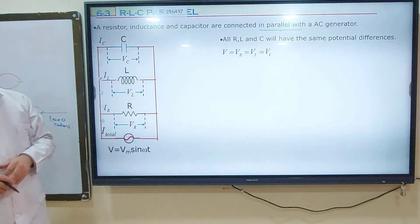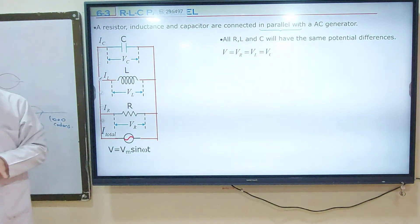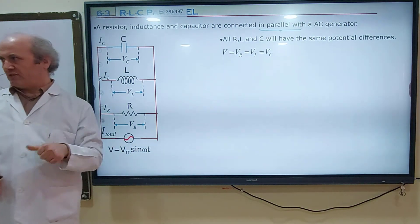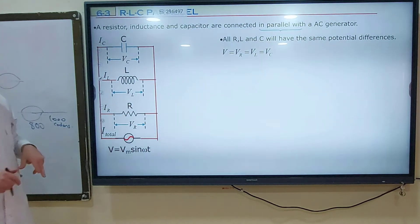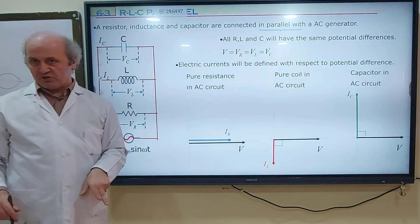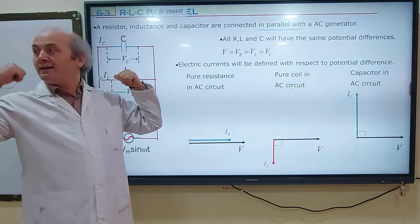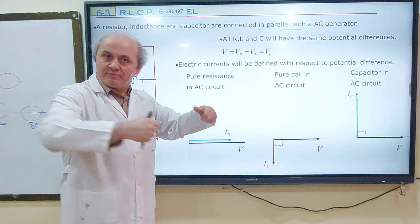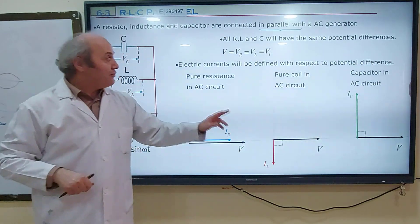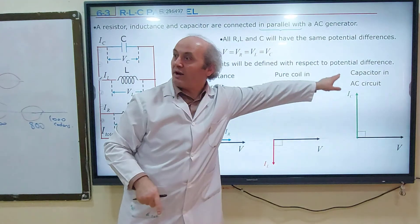Because potential differences are equal, we are going to define electric currents with the same potential difference. For a pure resistance circuit, the electric current is in phase with potential difference. But for a pure coil, the electric current lags behind — potential difference is leading. For a capacitor, the electric current is leading, so it's going to be in the positive y direction.